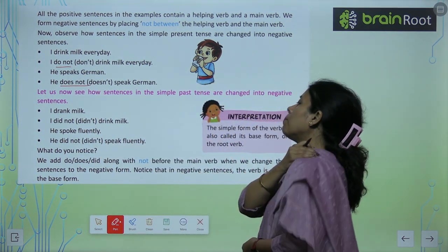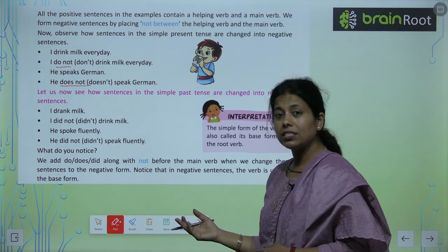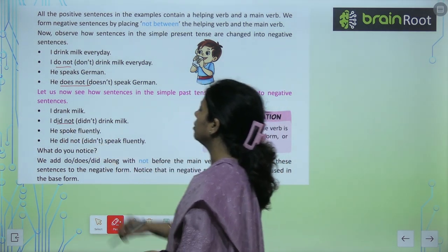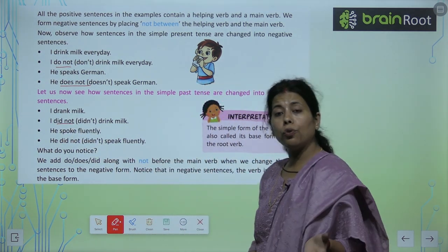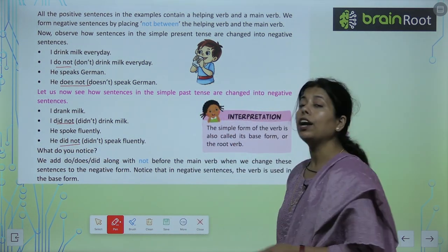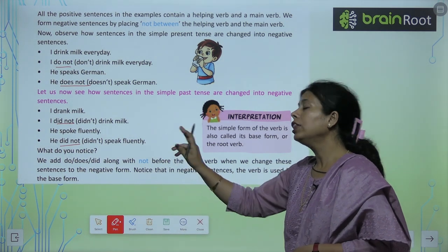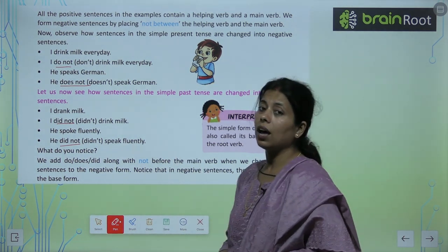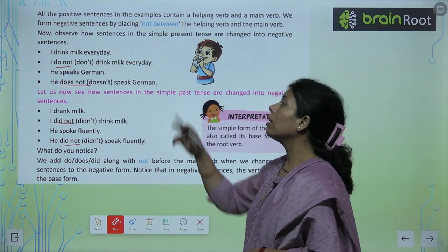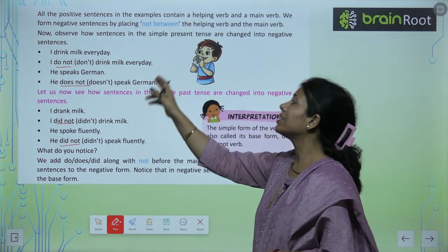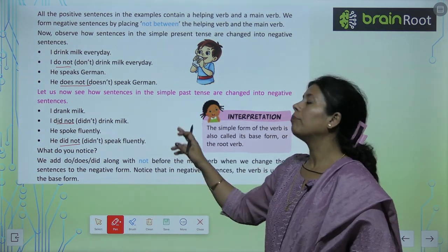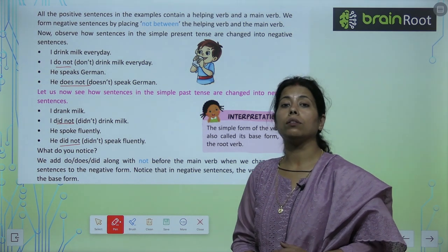Let us see how sentences in simple past tense change. अगर past tense की बात होती है: 'I drank milk' → 'I did not drink milk.' 'He spoke fluently' → 'He did not speak fluently.' What do you notice? We add do, does, or did along with not. Simple present tense में हमने do और does लगाया है, और past tense में हमने did लगाया है। इन rules को follow करते हुए आइए चलते हैं अपनी exercise पर।